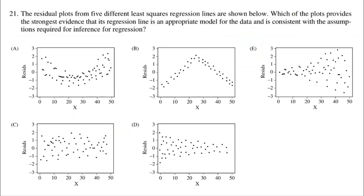Here is the first question. The residual plots from five different least squares regression lines are shown below. Which of the plots provides the strongest evidence that its regression line is an appropriate model for the data and is consistent with the assumptions required for inference for regression? What do we want to see in a residual plot? Nothing — we should see no pattern in a residual plot.